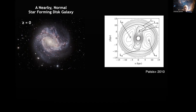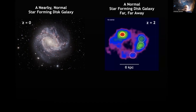I want to ask whether what has been found with respect to orbital structure and characterization for low redshift galaxies can also be applied to high redshift galaxies, which as you will see look quite different. Here is a high redshift counterpart — a normal star-forming disk galaxy, but not nearby; instead it's far away at redshift two. When you look at it, it looks completely different to the low redshift case.